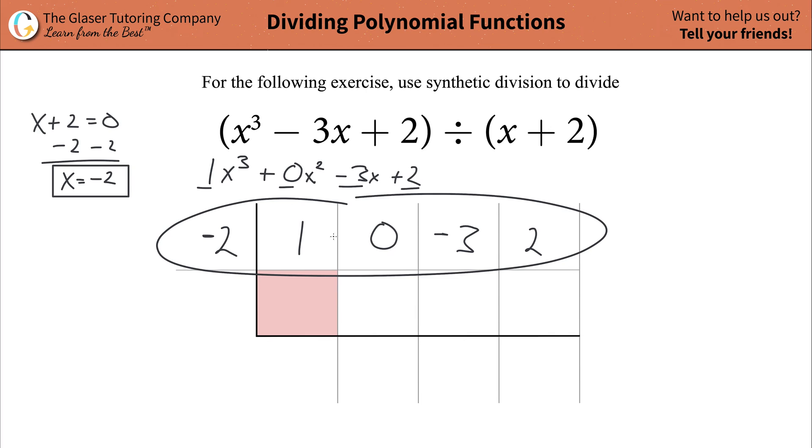Now that you have the entire row filled out, what you're going to do is follow a simple set of rules. First thing is just drop the leading coefficient all the way down to the bottom, 1. Then what you're going to do is take this number and multiply it by this value to get the value in the adjacent cell here. So negative 2 times 1 is going to be a negative 2.